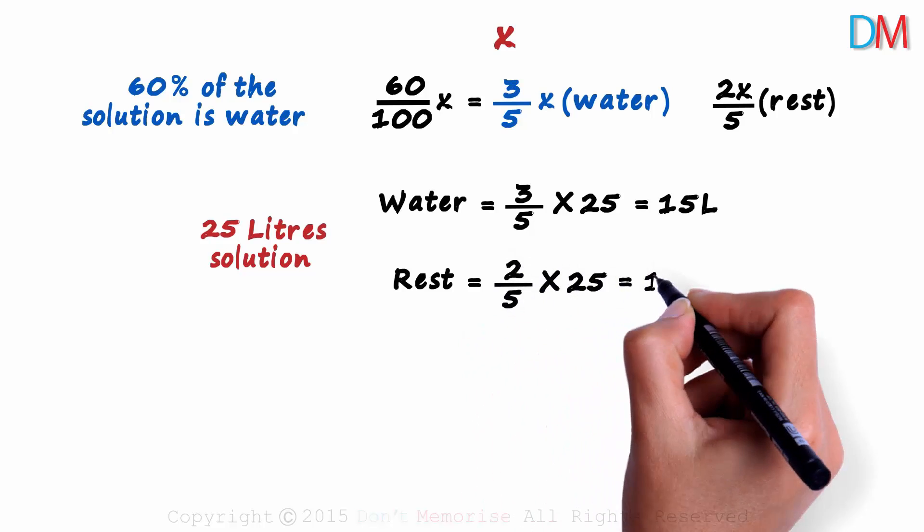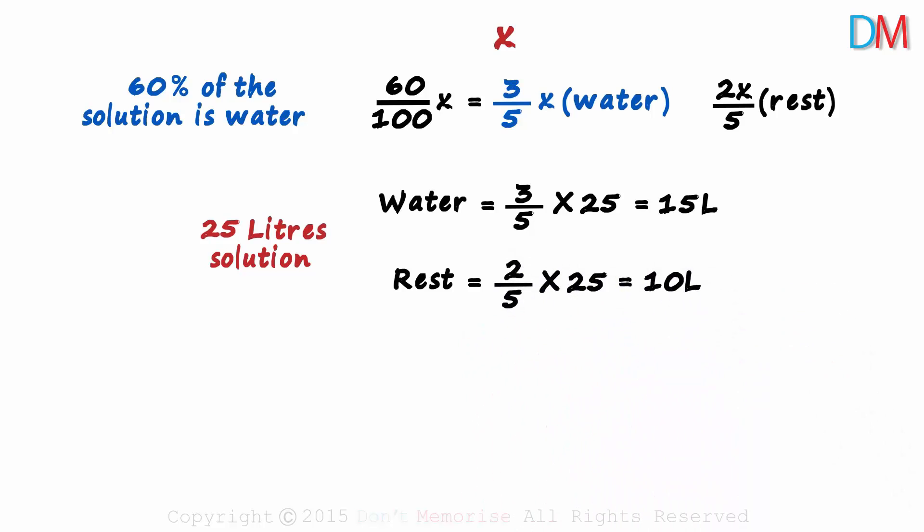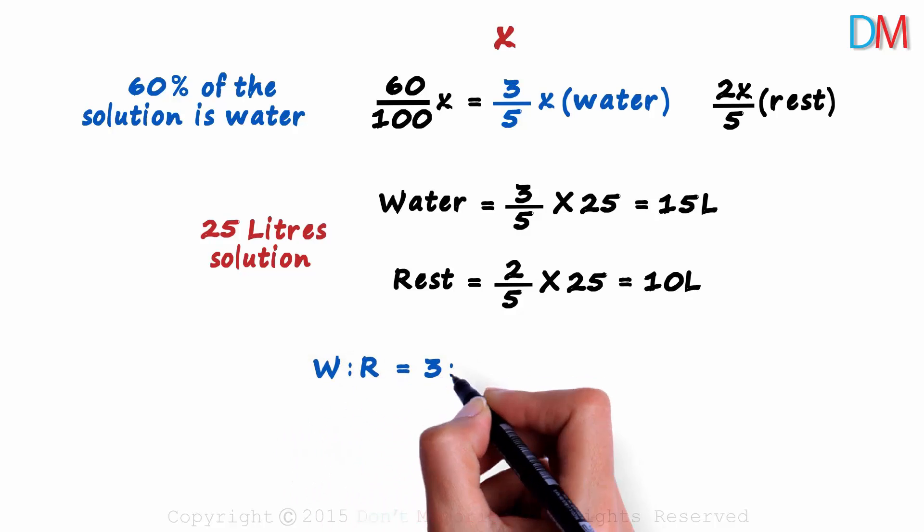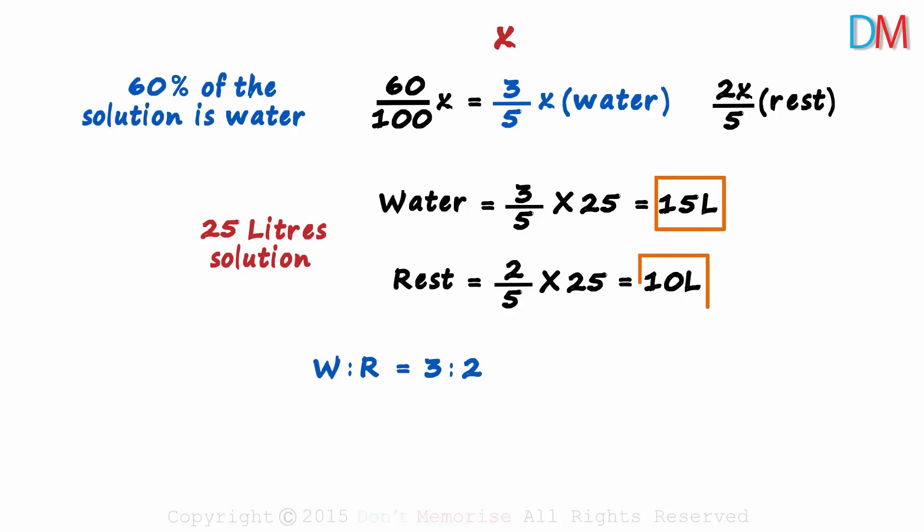This also tells us that the ratio of water to rest is 3 to 2. If we have 15 over 10, we get 3 over 2. If we divide 3x over 5 by 2x over 5, we get 3 to 2 and so on. So this percentage will also give us the ratio.